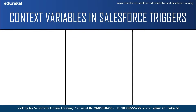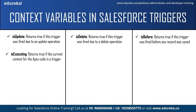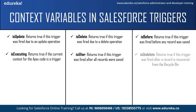The next context variable is isUpdate — this returns true if the trigger was fired due to an update operation. Next is isDelete — this returns true if the trigger was fired due to a delete operation. After this we have isBefore — this returns true if the trigger was fired before a record was saved to the database. Next is isExecuting — this returns true if the current context for the Apex code is a trigger, and not a Visualforce page, web service, or API call. Then we have isAfter — this returns true if the trigger was fired after all records were saved to the database.